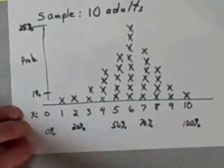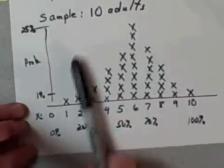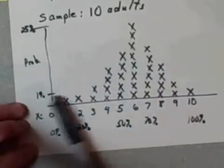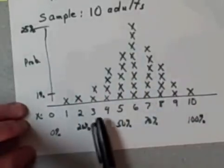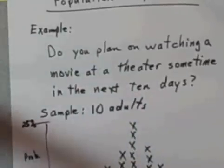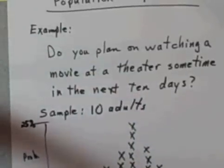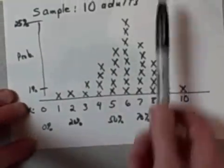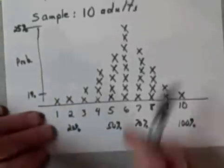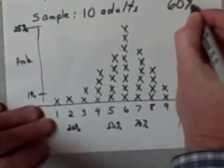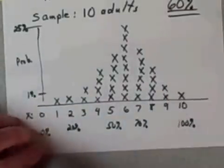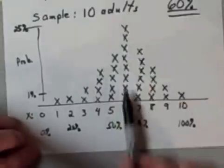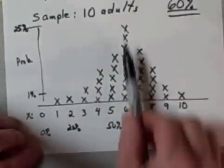In my previous video we created this example of a distribution of a lot of different possible samples we could collect. My question was: do you plan on watching a movie at a theater sometime in the next 10 days? We said my sample size was 10, and this would be the shape of the distribution of all those samples, where we know ahead of time that the true proportion is actually 60%, so six out of ten occurring the most often.